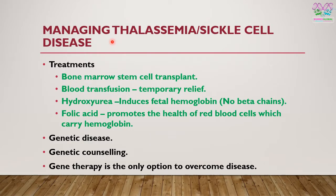Current management and treatment practices for both thalassemia and sickle cell disease involve bone marrow stem cell transplant, blood transfusion which provides temporary relief, and hydroxyurea. It has been reported that hydroxyurea induces the production of fetal hemoglobin. Fetal hemoglobin does not have beta chains — rather it has gamma chains — so people with fetal hemoglobin will never get sickle cell disease, since sickle cell disease is due to a defect in the beta chain. Folic acid treatments promote the health of red blood cells which carry hemoglobin.